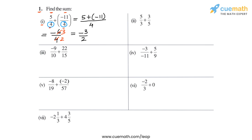So in part 1, the sum is -3/2. This is the answer for part 1. Then in part 2, we have to add 5/3 and 3/5.